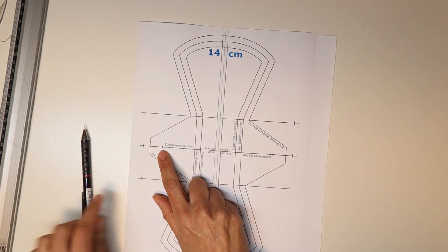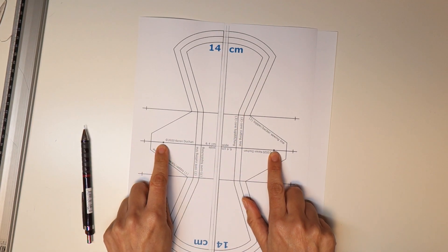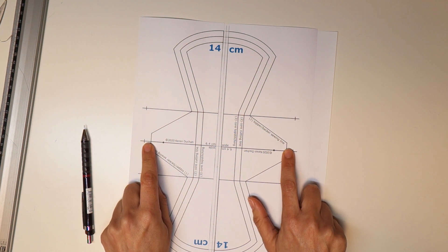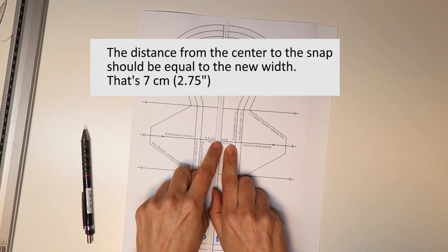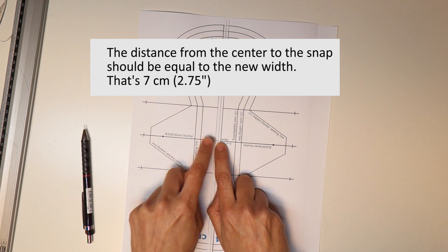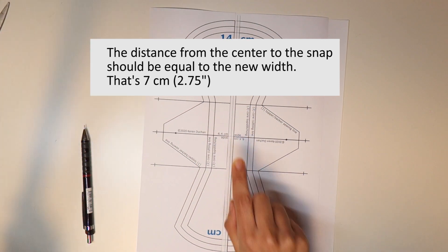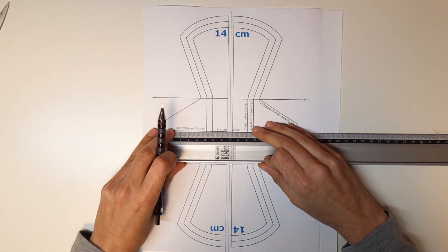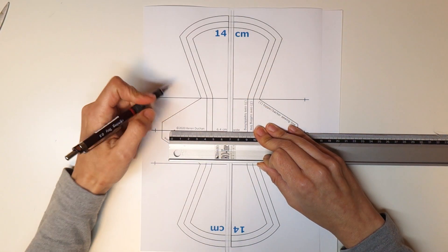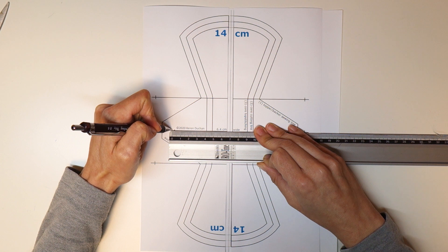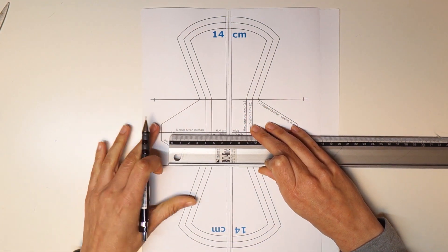We also need to adjust the snap placement and also the wings a little bit. So we need to make sure that the distance from here to the snap is also seven centimeters, or two and three quarter inch. So I measure seven centimeters from the center, and you can see that the snap has to move another three millimeters out.